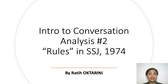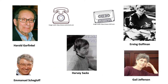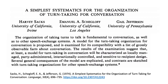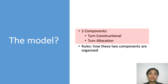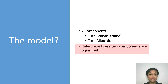Hi, as promised before, today we are going to talk about rules in SSJ 1974. In the previous video, we briefly discussed the history of CA, mentioned key contributors to the field, and started to dissect the seminal paper in conversation analysis by Sacks, Schegloff and Jefferson in 1974, or SSJ 1974 in short. The paper contains a proposal for a model for turn-taking organization for conversation. The model consists of two components: turn-constructional unit and turn-allocation, and the interactions between those two components by a set of rules. Today's video is dedicated to discussing those rules.